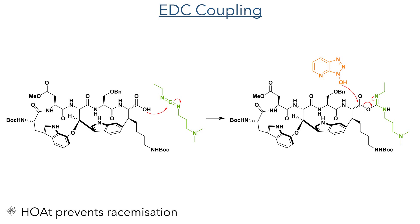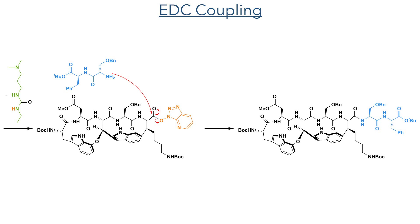With this directing group now removed, the carboxylic acid was subject to a peptide coupling, this time using EDC and HOAT. The hydroxyazabenzotriazole increases the reactivity of the activated ester and reduces racemization of the stereocenter. Reacting this with the peptide coupling partner completed the backbone of Darobactin, leaving only the functionalization of the pendant groups to be completed.